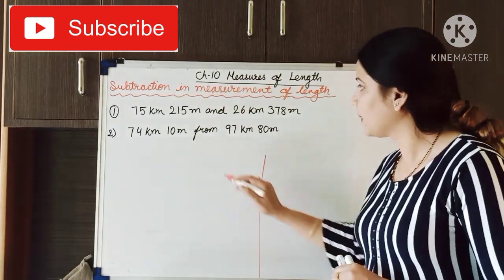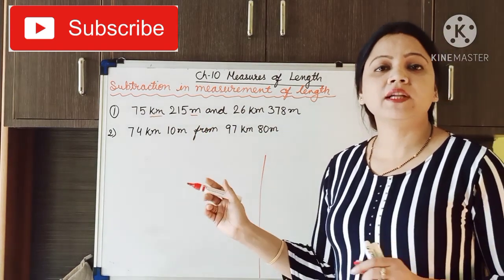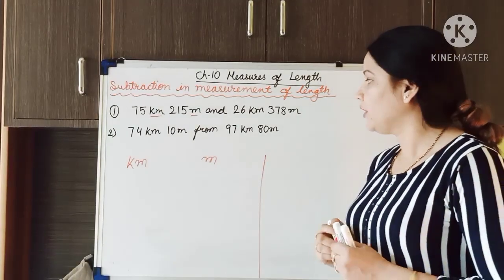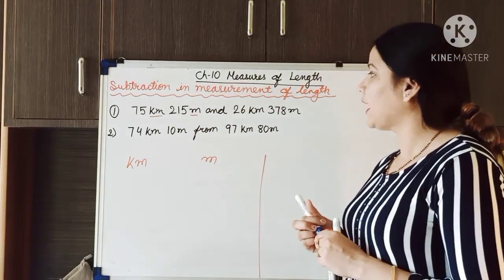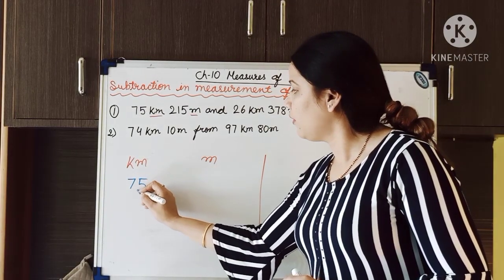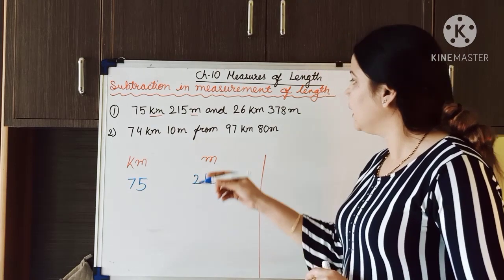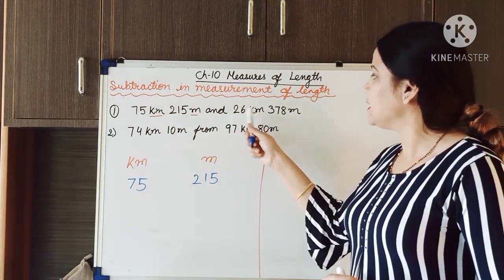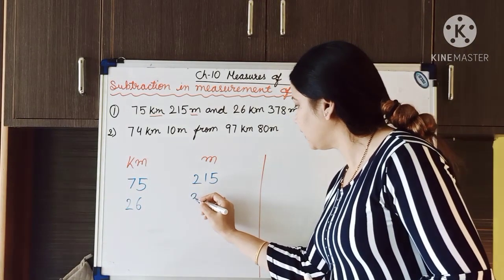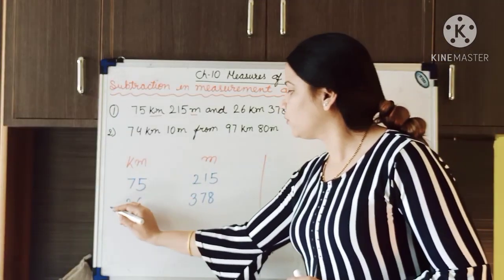In question number 1, you can see 75 kilometer and 215 meter is written. That means two different metric units are kilometer and meter. We have made two different columns for the units. Now we have to arrange the numbers accordingly. 75 is kilometer, so we write 75 in the kilometer column. 215 is meter, so we write it under the meter column. And 26 kilometer and 378 meter — we write 26 in the kilometer column and 378 in the meter column. Now we have arranged the numbers and we have to give the subtraction sign.